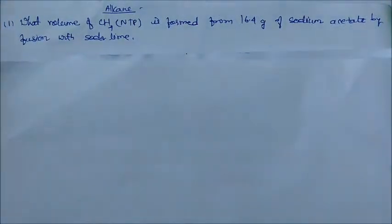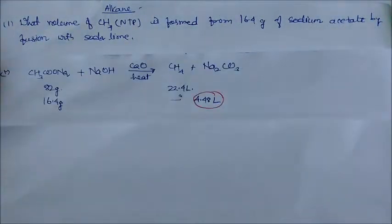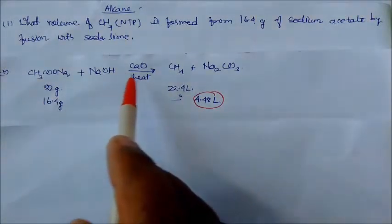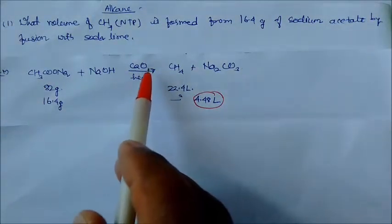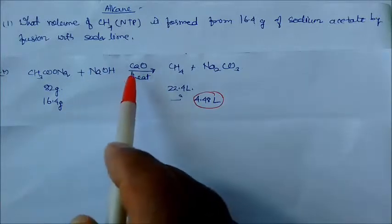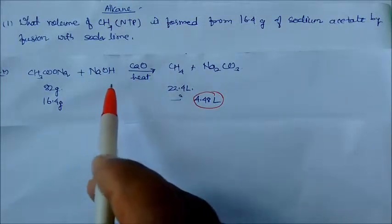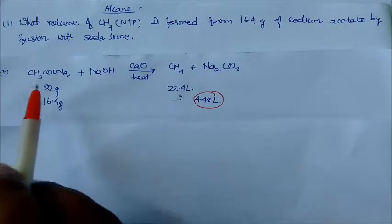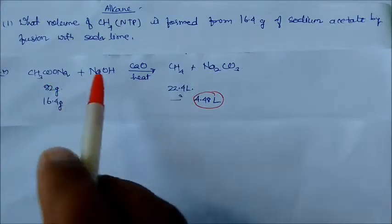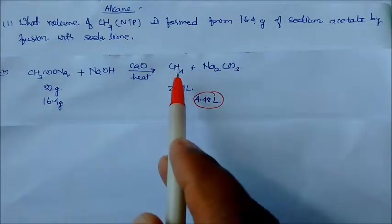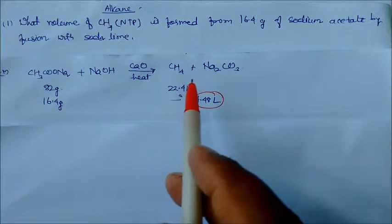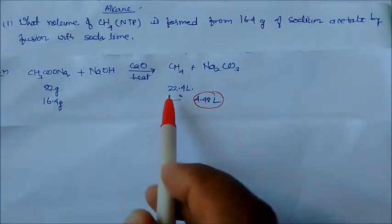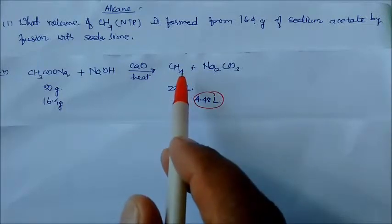Sodium acetate reacts with soda lime — a combination of NaOH and CaO. This is a decarboxylation reaction, which converts sodium acetate into sodium carbonate and methane gas. So 82 grams of sodium acetate will give you 22.4 liters of methane gas.